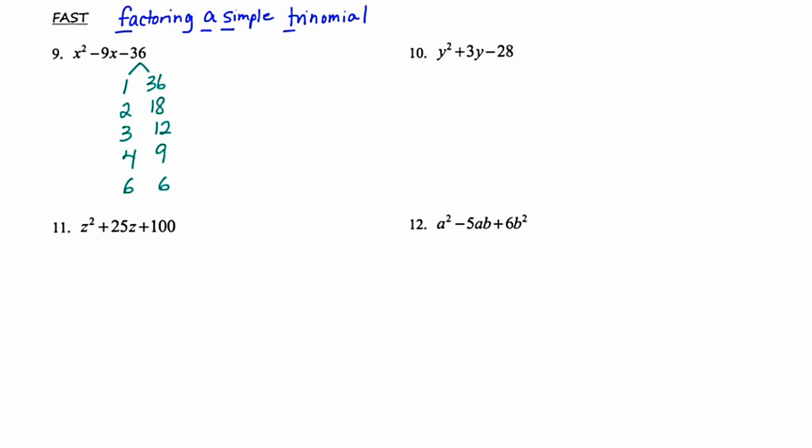I've made the list and that includes 1 and 36, 2 and 18, 3 and 12, 4 and 9, and 6 and 6. Of all these pairings, I need to find the pair that's going to give me a difference of 9, because 9 is in the middle — it's the linear coefficient. The pairing that gives a difference of 9 is 3 and 12, so I'm going to circle that as my winner.